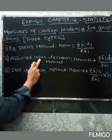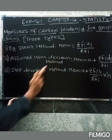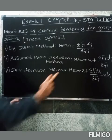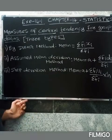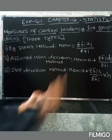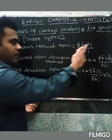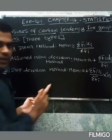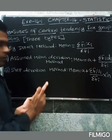The second method is the assumed mean deviation method. The third method is the step deviation method. The direct method formula is: mean equals summation of fi into xi, divided by summation of fi.